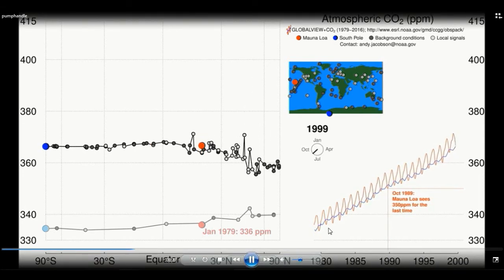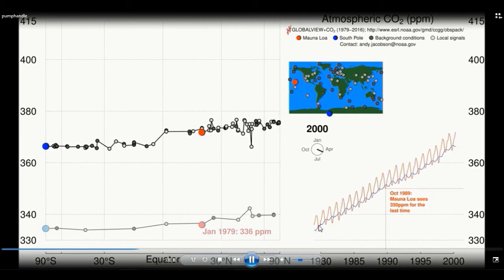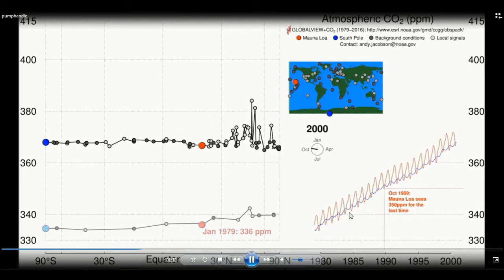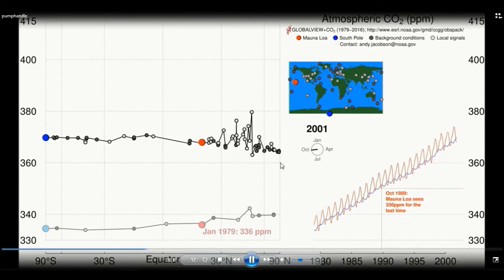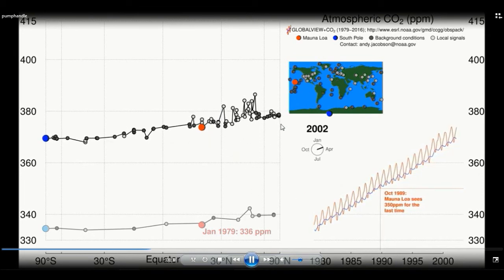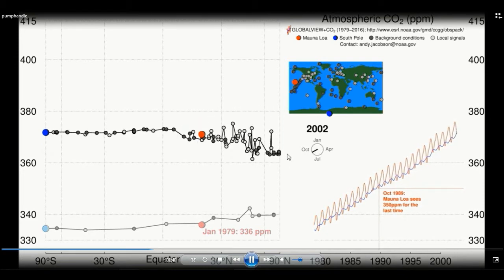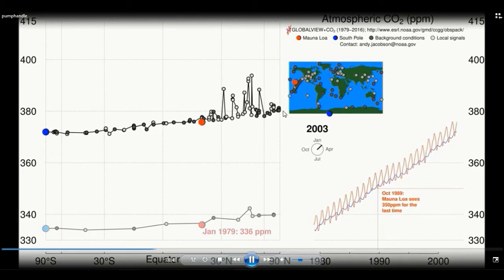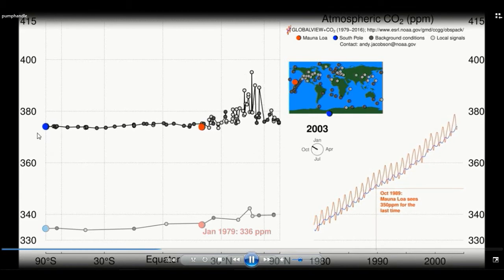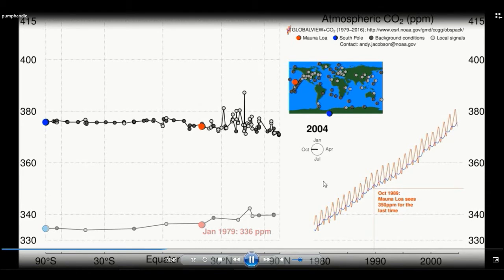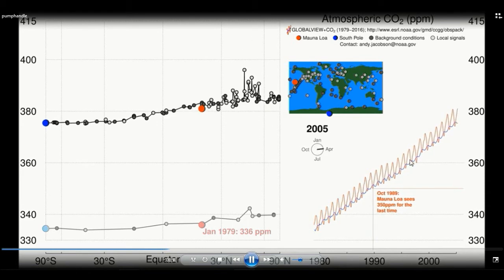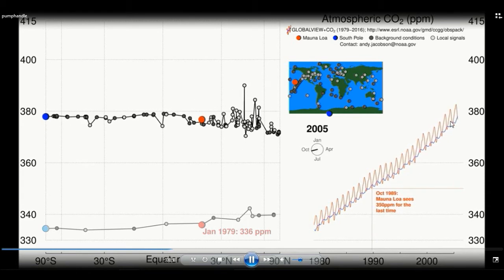This also takes place to a small extent in the southern hemisphere. You can see the blue line also has a slight wave to it. It goes upwards and downwards in a continuous wave as the years tick by, but it happens to a much smaller extent in the southern hemisphere. However, the overall trend is a continuous increase in carbon dioxide concentrations.